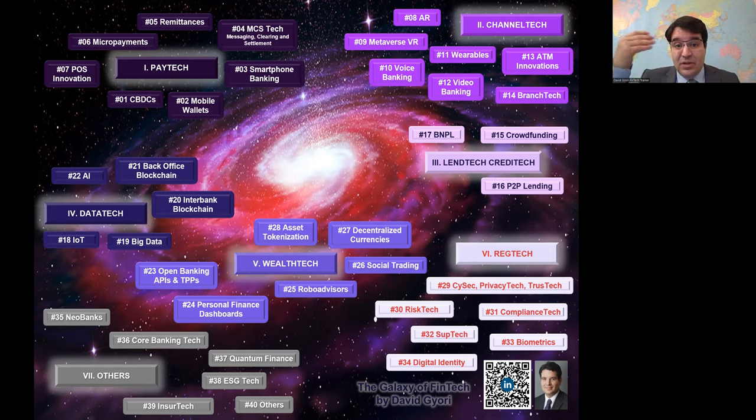And branch tech. Let's reimagine the branch. Let's reimagine the branch for the 21st century. Let's reimagine the branch for the age of data. Anyway, let's move from channel tech to lend tech and credit tech, our third solar system within the galaxy of financial technology. In this third solar system, we only have three planets, but rather large ones. And these planets are growing fast as well.